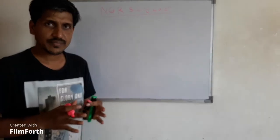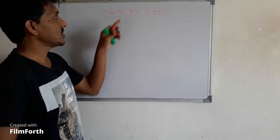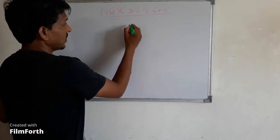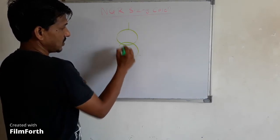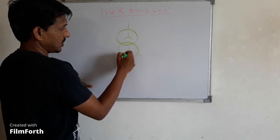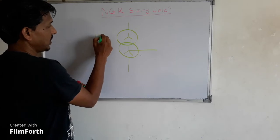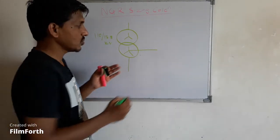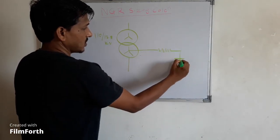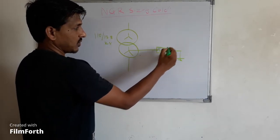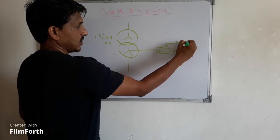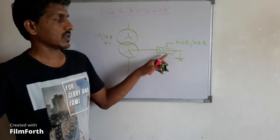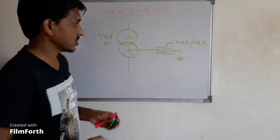NGR sizing calculation is not at all difficult. NGR is basically Neutral Grounding Resistance. You can also call it NER — Neutral Earthing Resistance. These are two different names for the same thing: neutral grounding resistance or neutral earthing resistance.